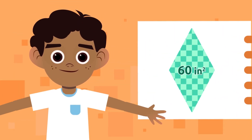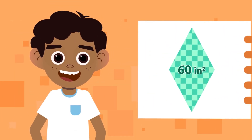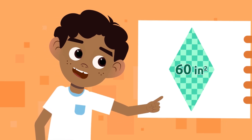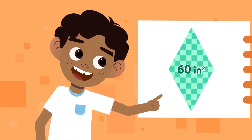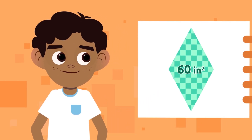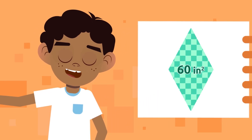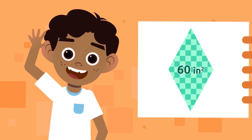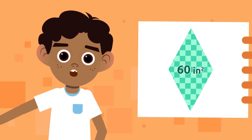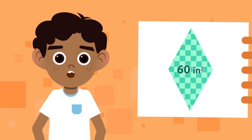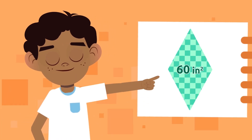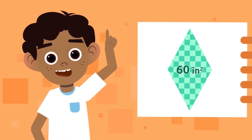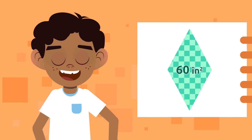The area of this rhombus is equal to 60 square inches — this rhombus fits sixty one-square-inch squares. Well done! Let's look at another example.